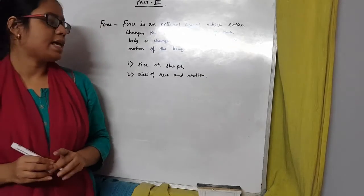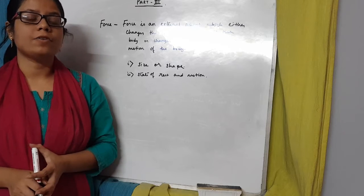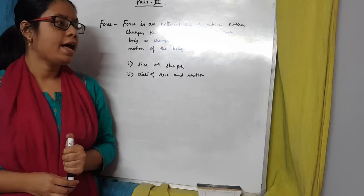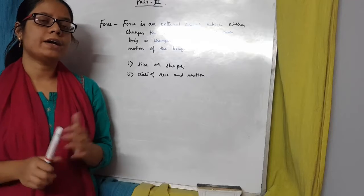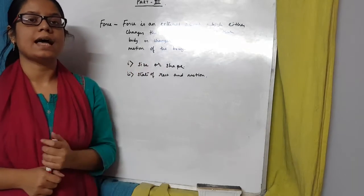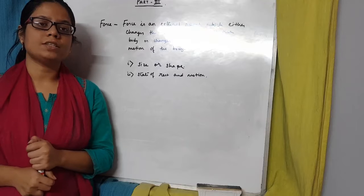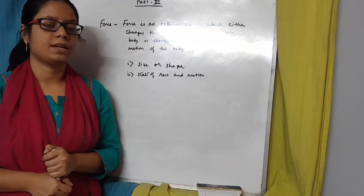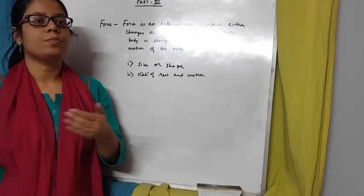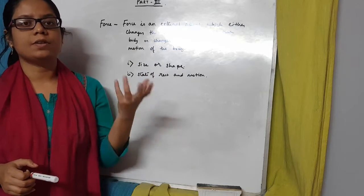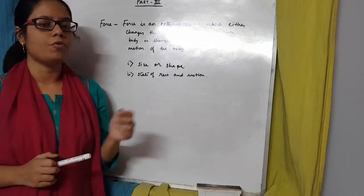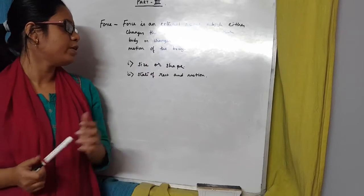For example, changing the size and shape of the body: suppose we have a rubber ball and we apply pressure on it — the size and shape changes. Similarly, if we have a spring and attach some load, the length of the spring increases. For state of rest and motion: a ball lying on the ground won't move unless pushed; a horse cart moves due to force; gravitational force makes everything fall toward the earth.